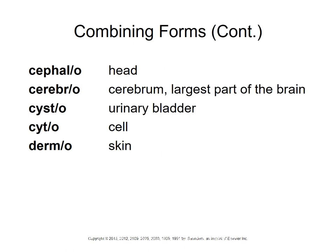Here are more combining forms. 'Cephalo' means head, 'cerebro' is the cerebrum — the largest part of your brain, 'cysto' means urinary bladder, 'cyto' means cell, and 'dermo' means skin. Try to think of terms you've heard — like dermatologist, the doctor who takes care of your skin. Put these on flashcards: 'cephalo' on one side, 'head' on the other.